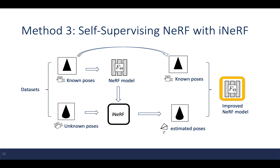Finally, the authors perform self-supervision with iNeRF. Datasets contain images with or without pose labels. Images with pose labels are used to train the initial NeRF model, which is then fed into iNeRF to estimate the poses of images without pose labels. These together train a new NeRF model with improved performance.